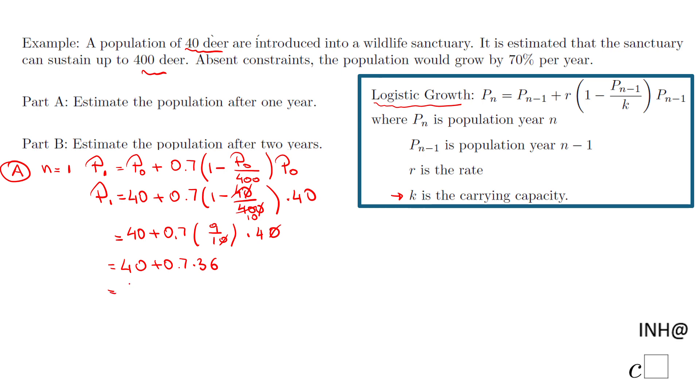So let me grab a calculator now. Like I said, depends on what calculator you have, you can do that from the beginning. 40 plus 0.7 times 36, I end up with 65.2.